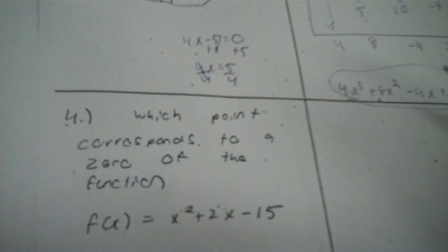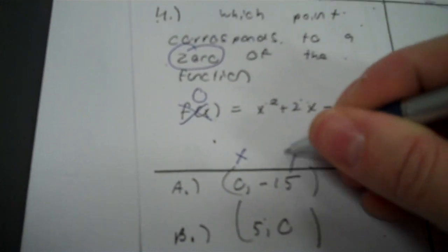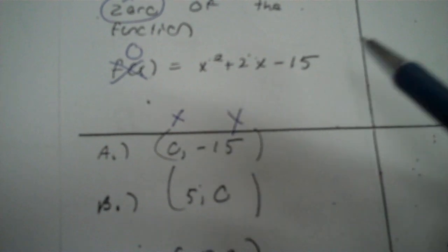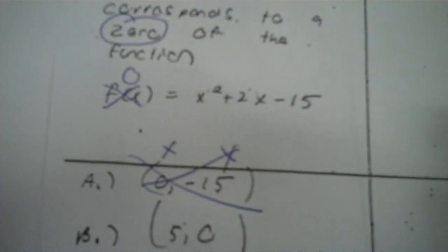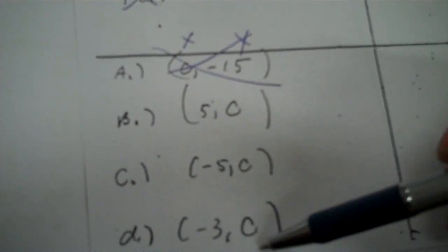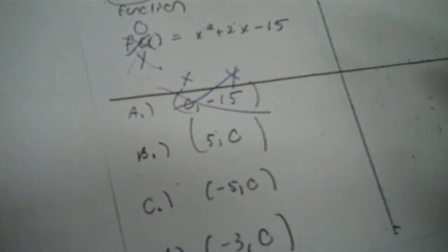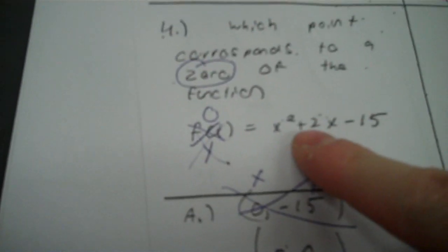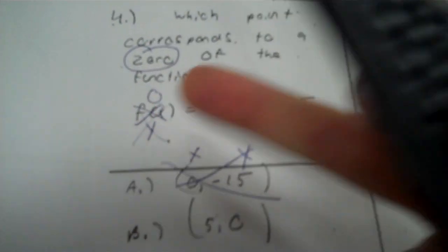Which point corresponds to a zero of the function? Zero of the function means this expression is zero — that's like a Y value. I want to find which value of X makes that zero. The one where we got zero for both X and Y, you want to cross that out. Zeros of the function mean the Y coordinate is zero. This is where Y equals zero — a zero of the function means the expression equals zero.